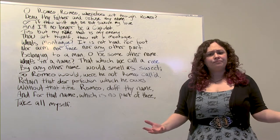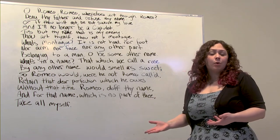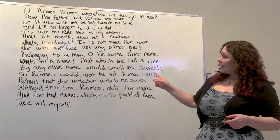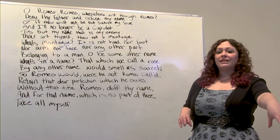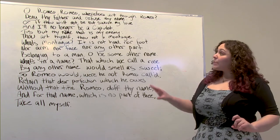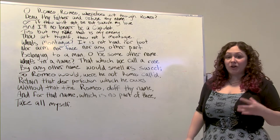What's a soliloquy? It's a character saying their thoughts aloud. Sometimes they're by themselves, or they think they're by themselves. In the balcony scene, at this point Juliet thinks she's by herself — she doesn't realize that Romeo is nearby listening in. A soliloquy is different than a monologue, which is any time a character speaks for a long period of time. Soliloquies specifically deal with a character's inner thoughts, what's going on internally. This is a very famous soliloquy — you probably know a line or two from it.